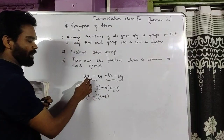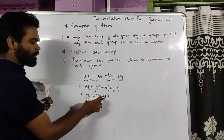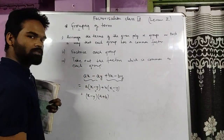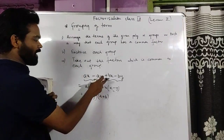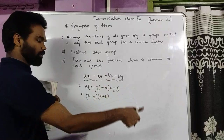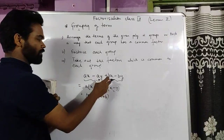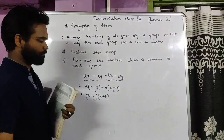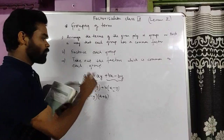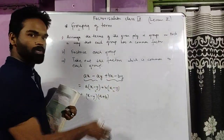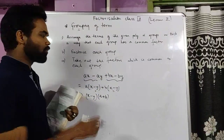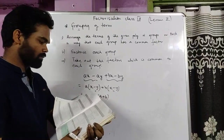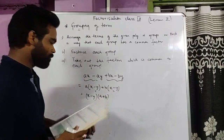So (x minus y) is one factor, and (a plus b) is another factor. This means if you divide this expression by (x minus y), there will be no remainder. Similarly, if you divide by (a plus b), there will be no remainder. Now suppose the terms are not already grouped and we have to figure out the grouping ourselves. Let's take one more example.